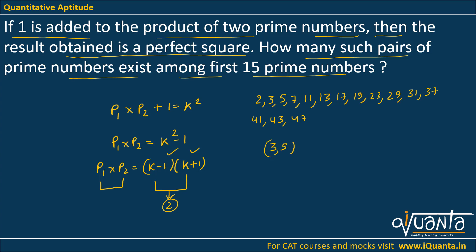So first such pair is 3, 5, then we have 5, 7, we have 11, 13, we have 17, 19, we have 29 and 31, we have 41 and 43.